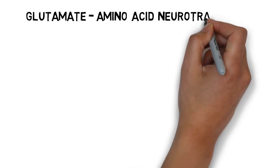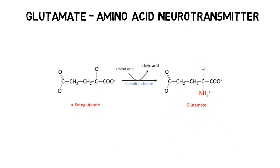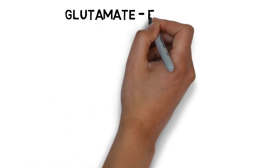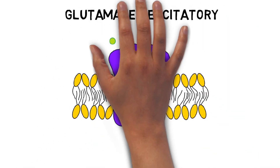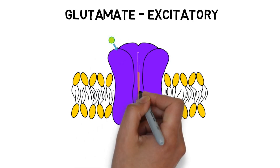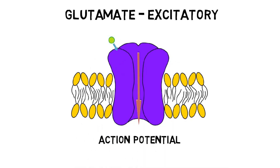Glutamate is an amino acid that also functions as a neurotransmitter. Although glutamate is obtained through the diet, it cannot pass the blood-brain barrier and thus must be synthesized in the brain. It can be synthesized from alpha-ketoglutarate, an intermediate product in the citric acid cycle. Glutamate generally has excitatory actions, meaning that when it interacts with the receptors of a neuron, it makes that neuron more likely to fire an action potential. It is used at the vast majority of excitatory connections in the brain, and at more than half of all synapses in the brain.